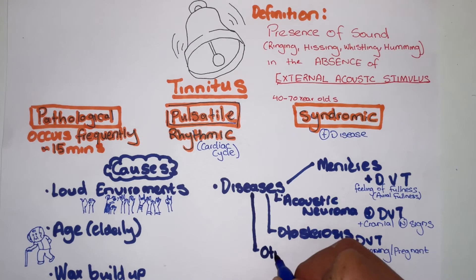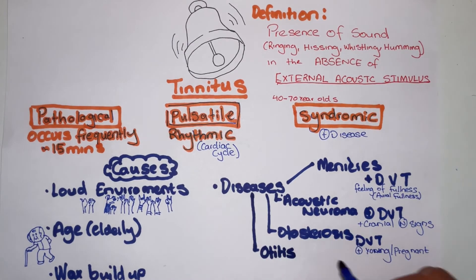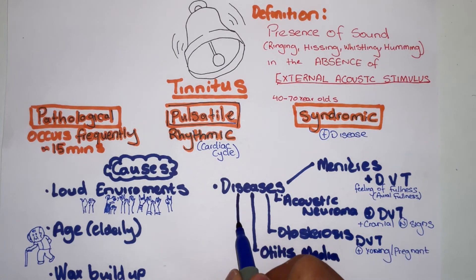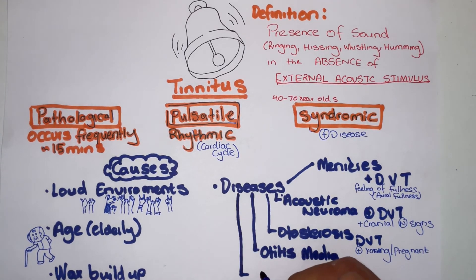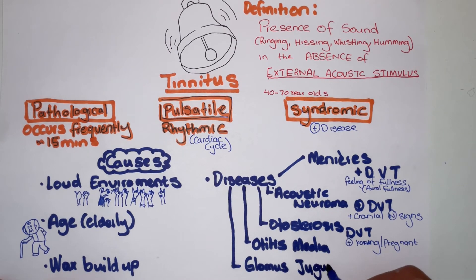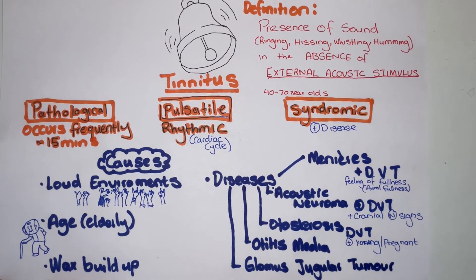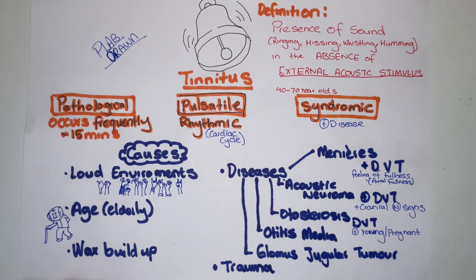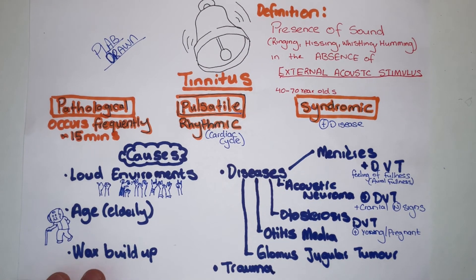Otitis media can also cause the sensation of ringing in the ear during infection. Remember pulsatile, rhythmic tinnitus? If the patient had a glomus jugular tumour — a tumour in the jugular foramen — then they would complain of pulsatile tinnitus. And lastly, following a traumatic blow to the head, a patient can also experience tinnitus.